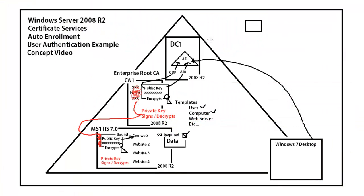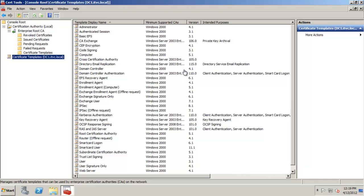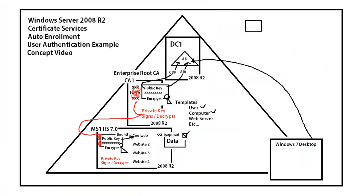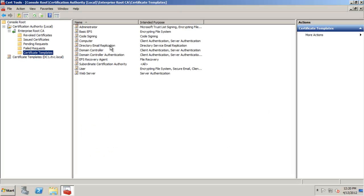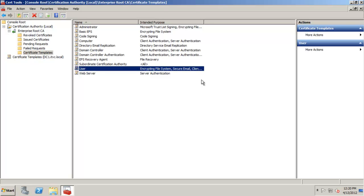In this environment, everything's 2008 R2. We have a domain controller with Active Directory. We have an enterprise root CA with a self-signed certificate — a public key embedded in the certificate and a private key — with the ability to issue all these different types of certificates. The CA has a complete list of templates it could potentially issue. There's also a list of certificates it's currently allowed to issue, and we can see that a user certificate is indeed on the list.